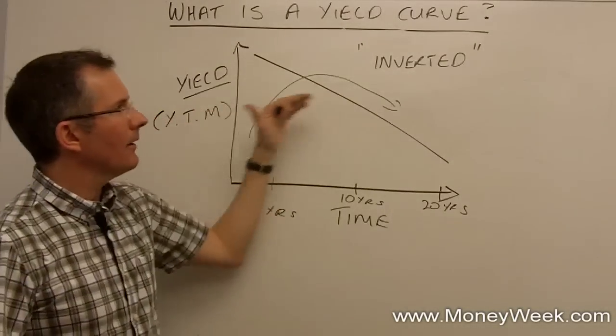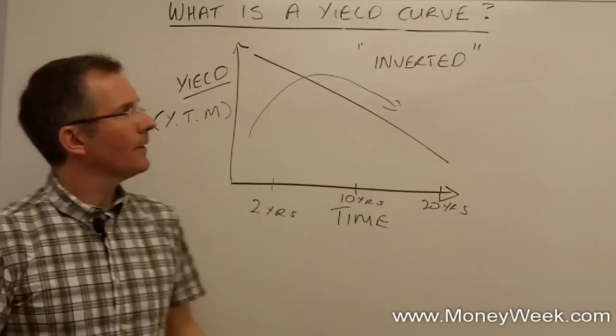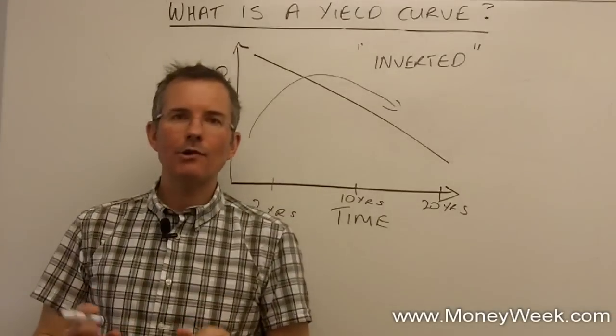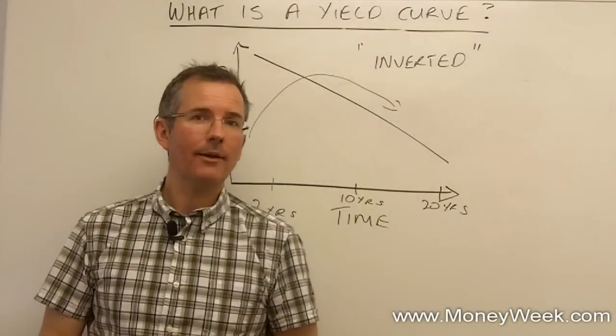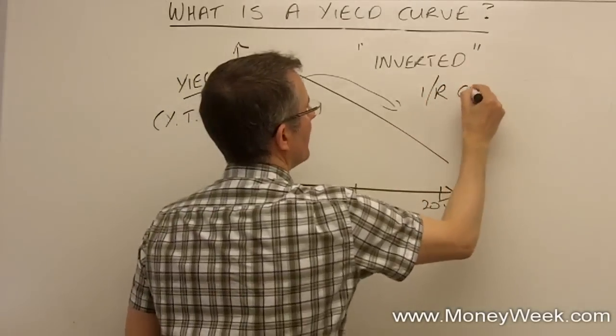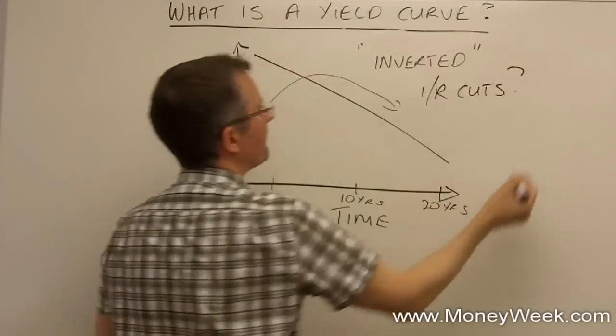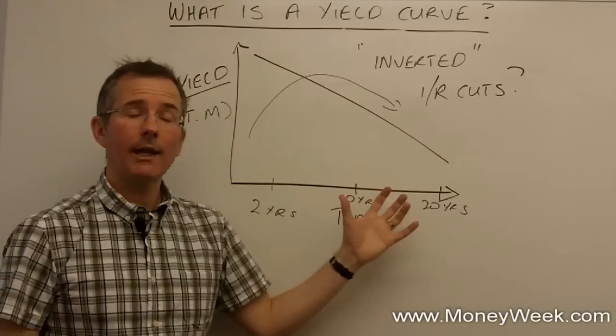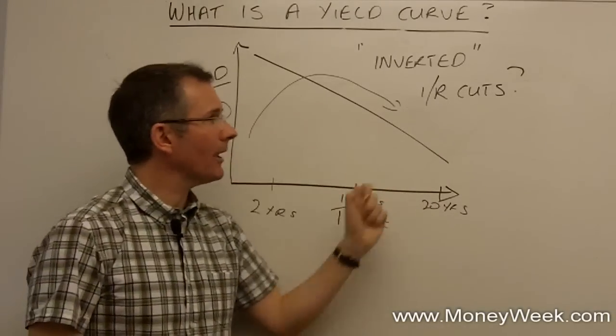When the economy, let's say the US or the UK economy, gets into trouble, basically the expectation is that interest rates will be cut by central banks. And that's one of the things that can be signalled. Perhaps we're looking at interest rate cuts. The bond markets are expecting interest rate cuts. Now, if that's the case, all of a sudden, people will look at long-dated bonds and think, hmm, okay.